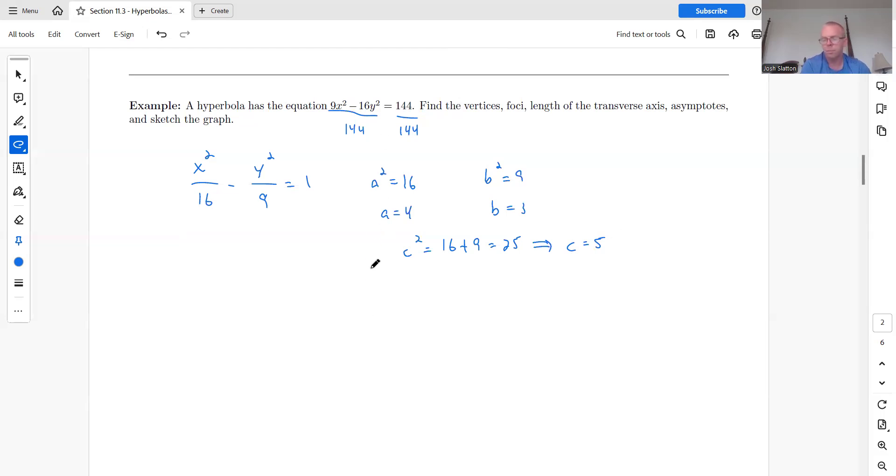So the vertices come from a, and so we have plus or minus 4, 0. Focus points come from the c. And if this is the x-coordinate, the focus points will also be on the x-axis.